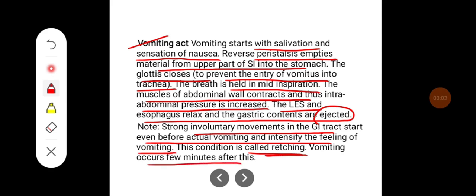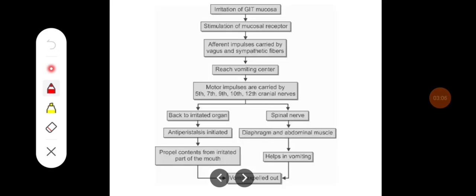Vomiting occurs a few minutes after retching. Irritation of the GI mucosa leads to stimulation of the mucosal receptors, and the information is carried by afferent impulses via the vagus and sympathetic fibers to the vomiting center. The motor impulses are carried by the 5th, 7th, 9th, 10th, and 12th cranial nerves back to the irritated organ. They initiate anti-peristalsis and propel the contents from the irritated part toward the mouth. Some afferents go to the spinal nerves, and the diaphragm and abdominal muscles are stimulated to assist in expulsion.